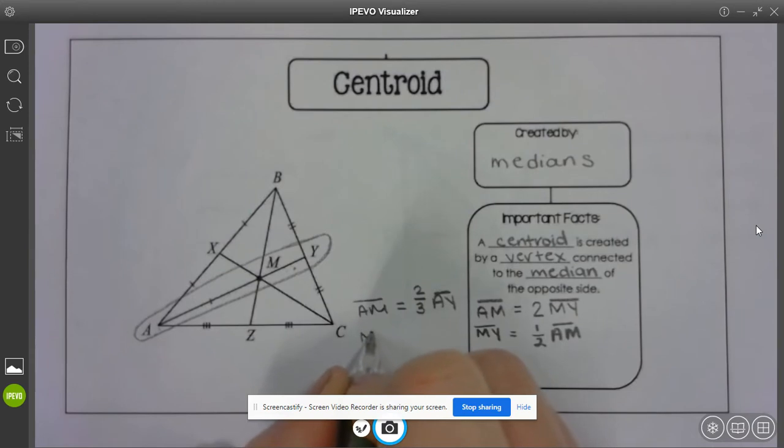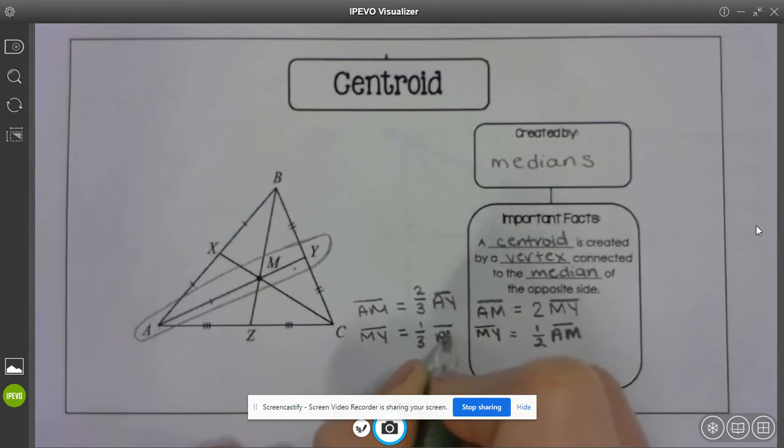So AM is two-thirds of the full length of AY because there's two of those chunks in here. And for MY, well, that's the other piece, so that would be one-third of AY.